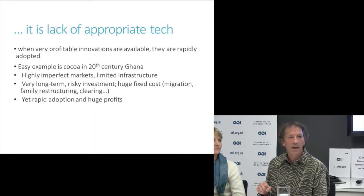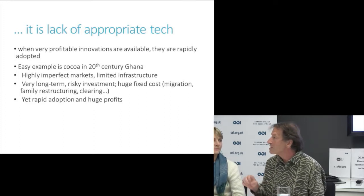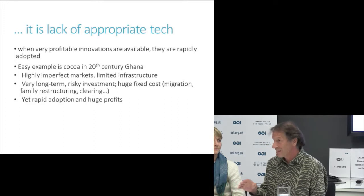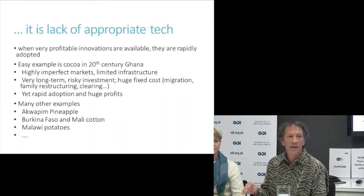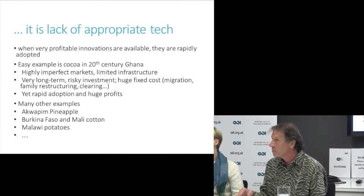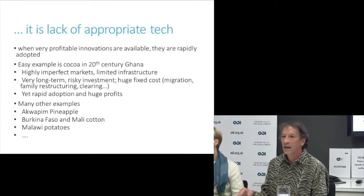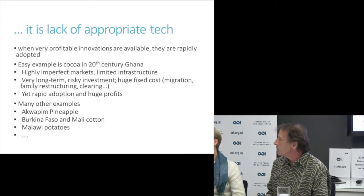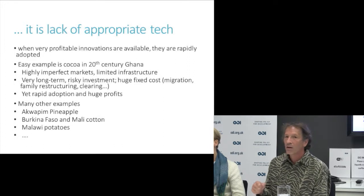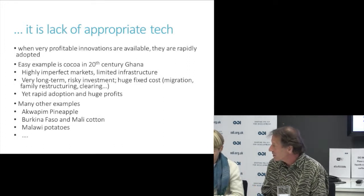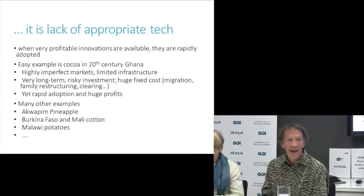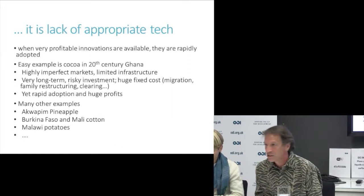That's the most extreme and best example, but there are many others. I've worked in Aquapim in Ghana with pineapple farmers where we saw similar things happening. Burkina Faso and Mali cotton growers, Malawi potato growers — over and over again, we see that when there are opportunities, farmers will overcome obstacles, including disastrous roads, bad infrastructure, and bad institutions.